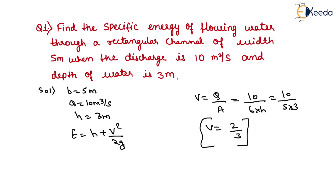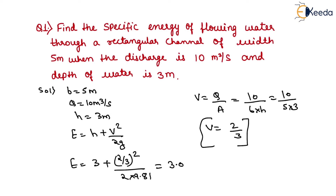Now we put the values of h and v into the formula, so it equals 3 plus (2/3)² upon (2 × 9.81). Solving this, the value of E equals 3.0226 meters, which is the specific energy of flowing water.